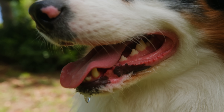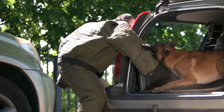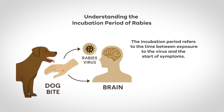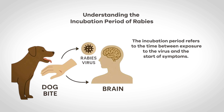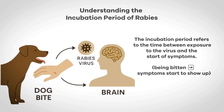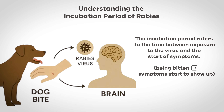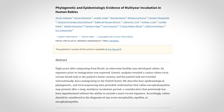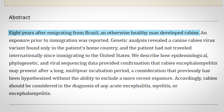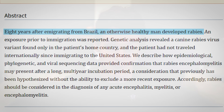Rabies is transmitted through the saliva of an infected animal, typically through a bite, but also through scratches or licks on open wounds or mucous membranes. The incubation period is the time between exposure to the virus and the start of symptoms. Rabies has a long incubation period averaging around 1 to 3 months, though symptoms can appear in just a few days or take multiple years — there was a case of a man in Brazil bitten by a dog 8 years before developing symptoms, though that is very rare.